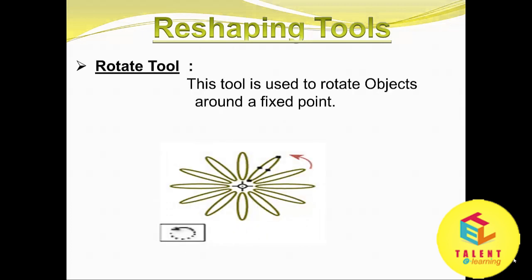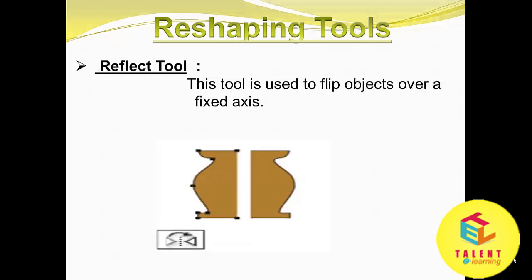Now we will discuss the Rotate tool. This tool is used to rotate an object around a fixed point. Reflect tool: this tool is used to flip an object over a fixed axis. This is a symbol of the Reflect tool.